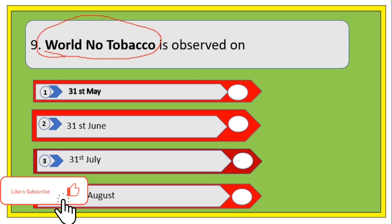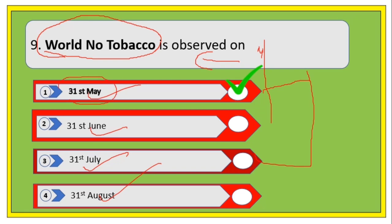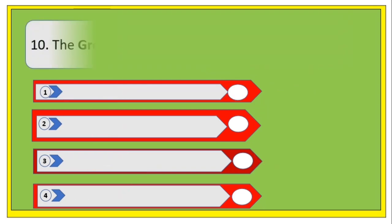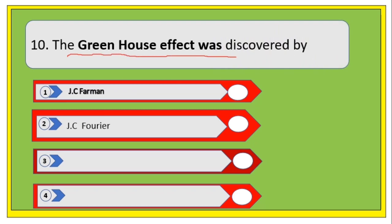World No Tobacco Day is observed on which date? This type of world observation day question is commonly asked in exams — remember as many as possible. Options are 31st May, 31st June, 31st July, and 31st August. The right answer is 31st May.